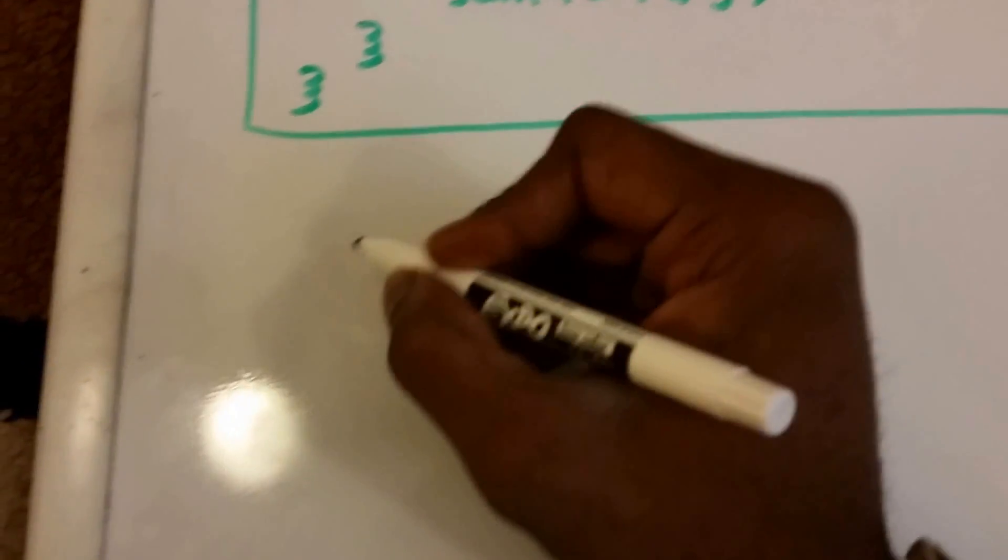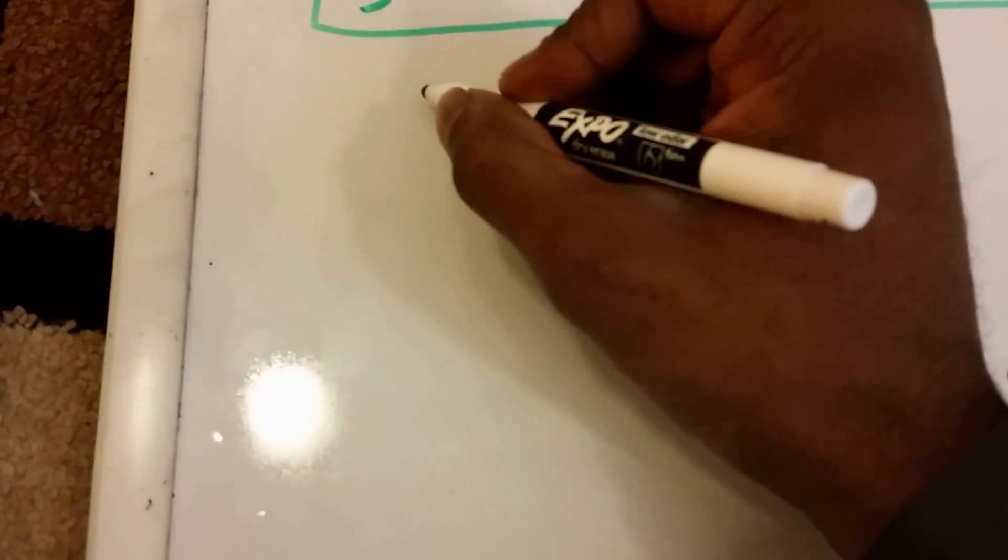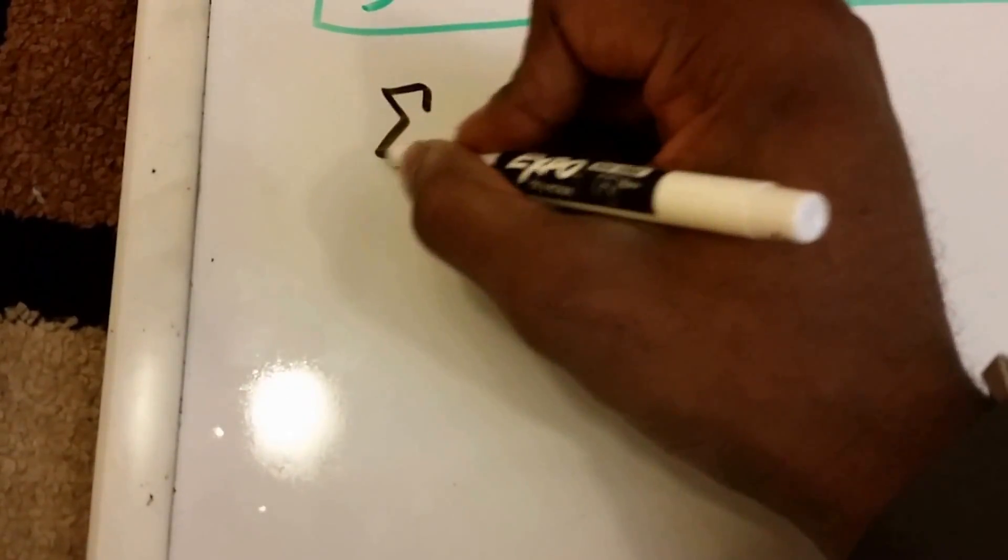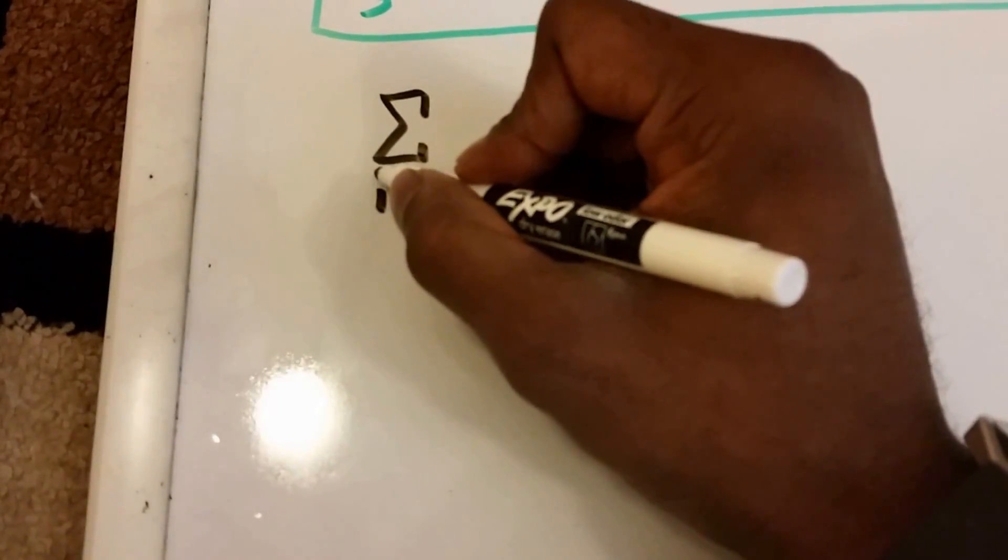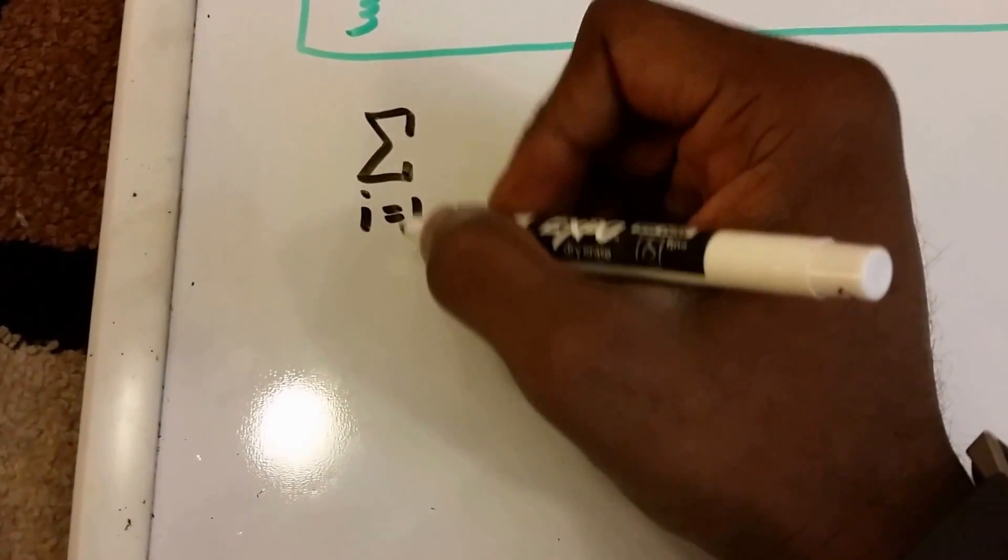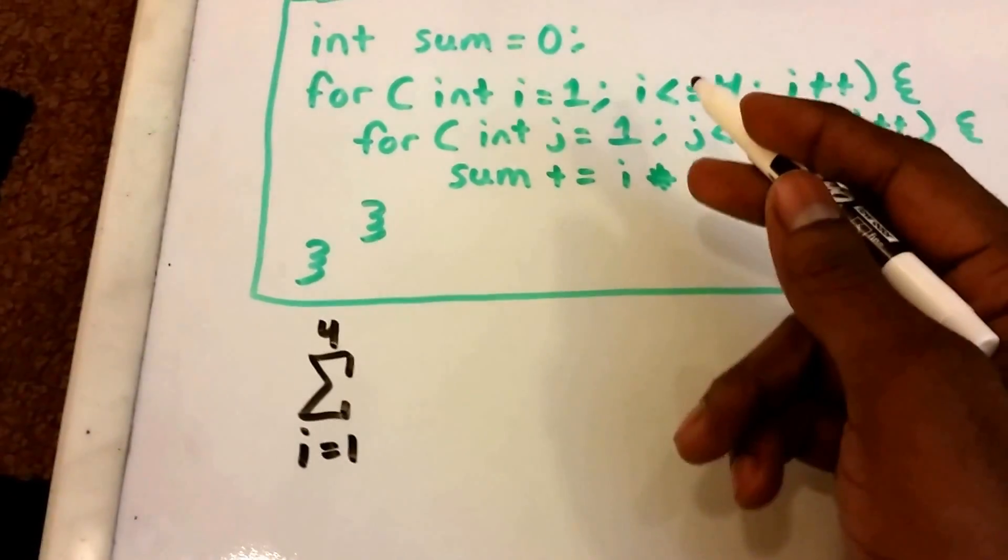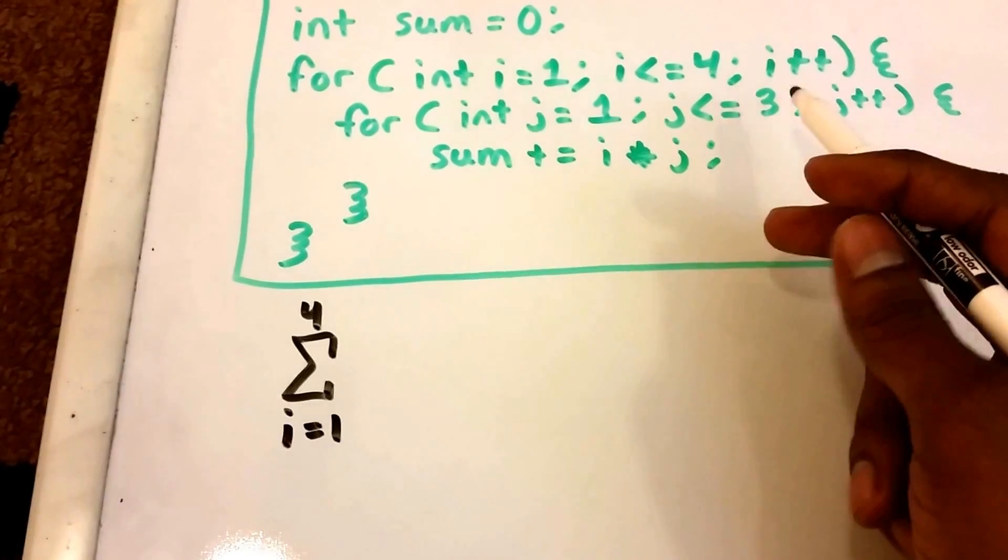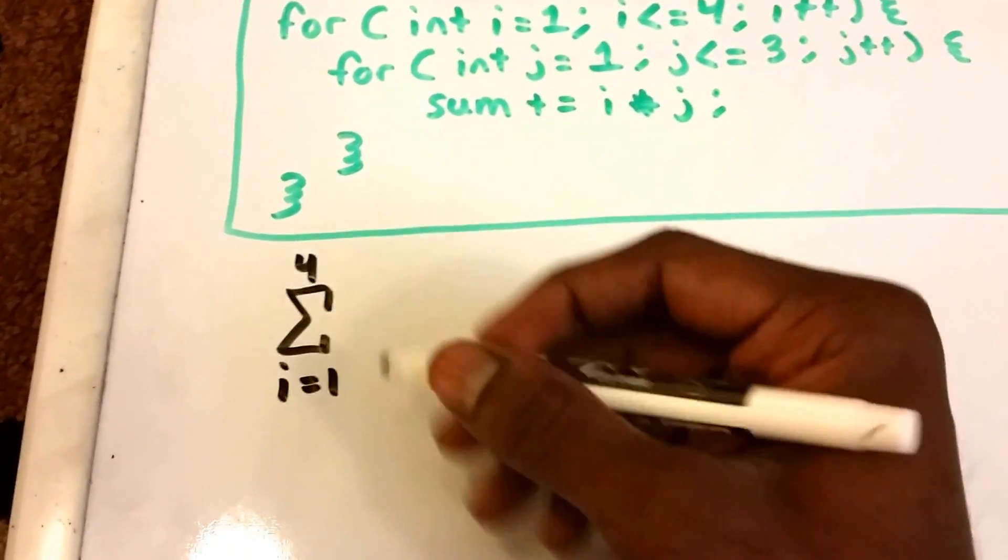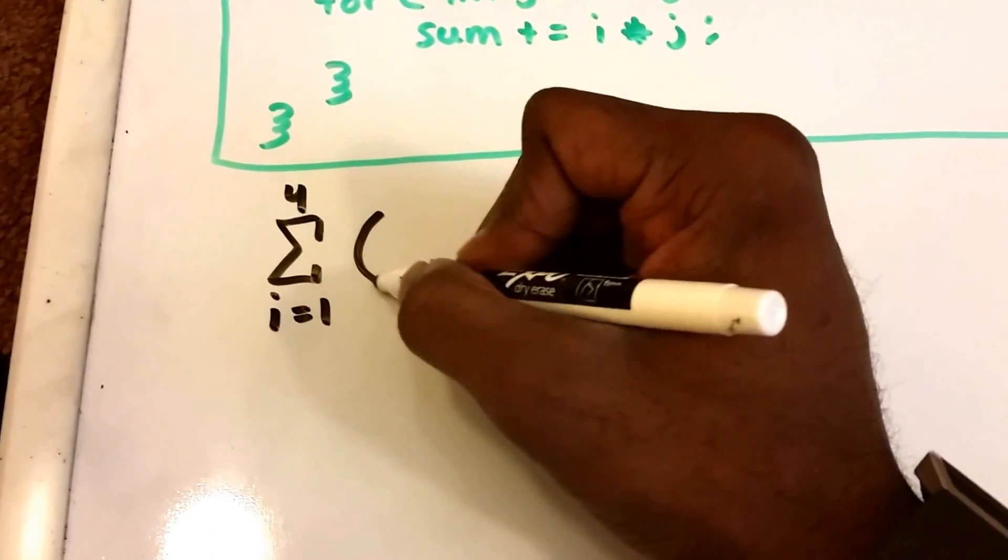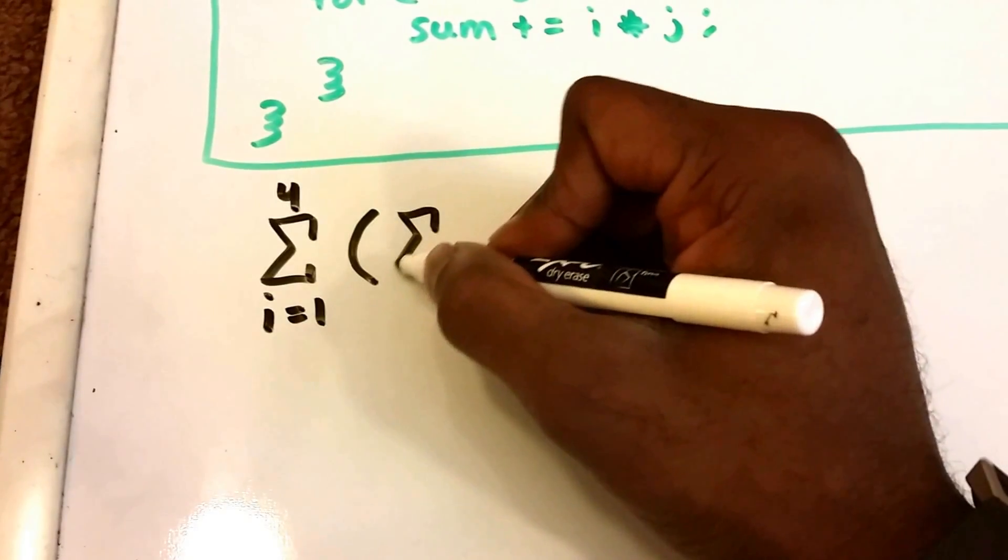All right, so first off we have our outer summation and it runs from i equals 1 all the way to 4, and we see that for our first loop here.